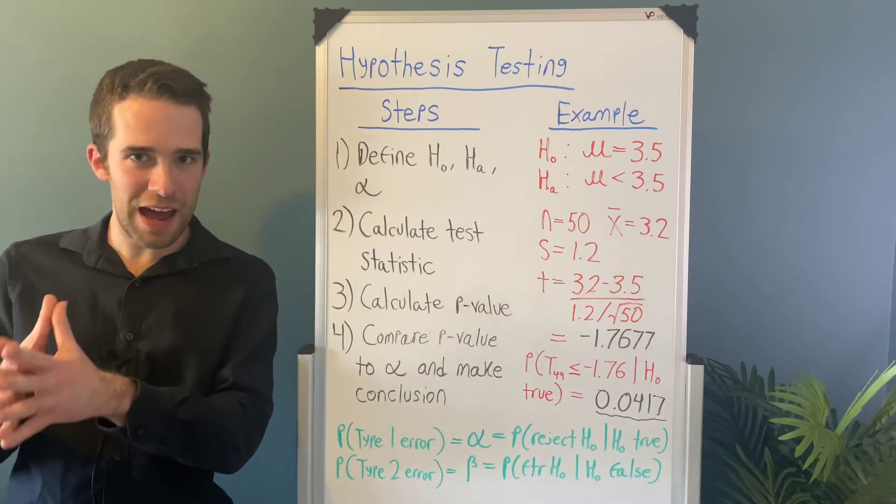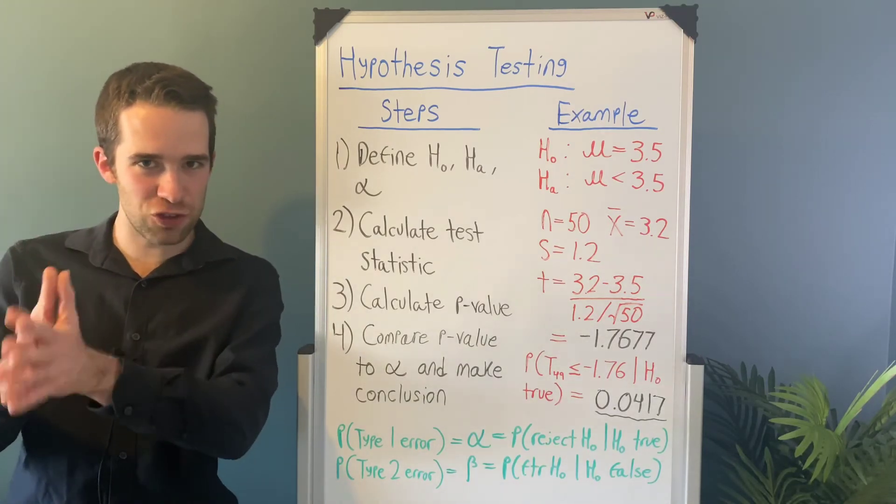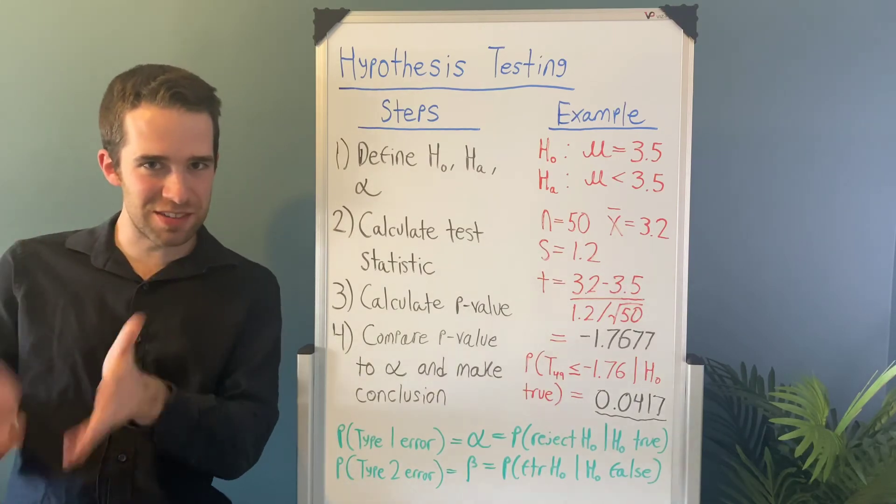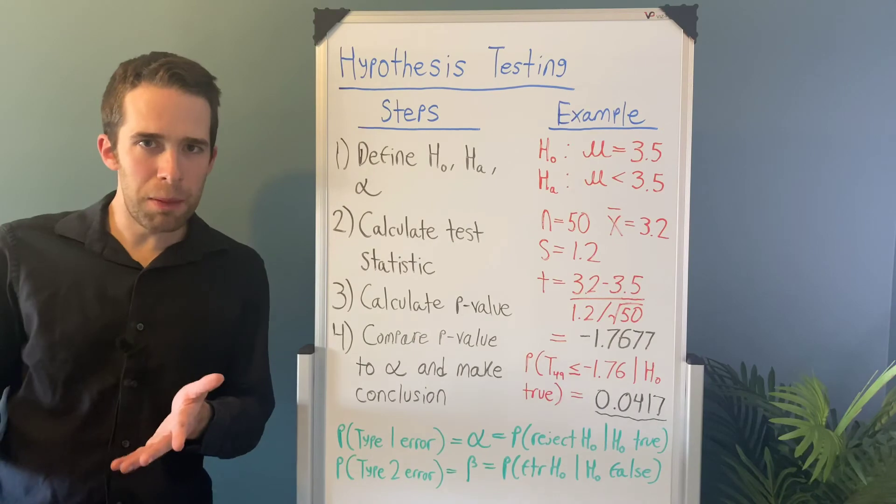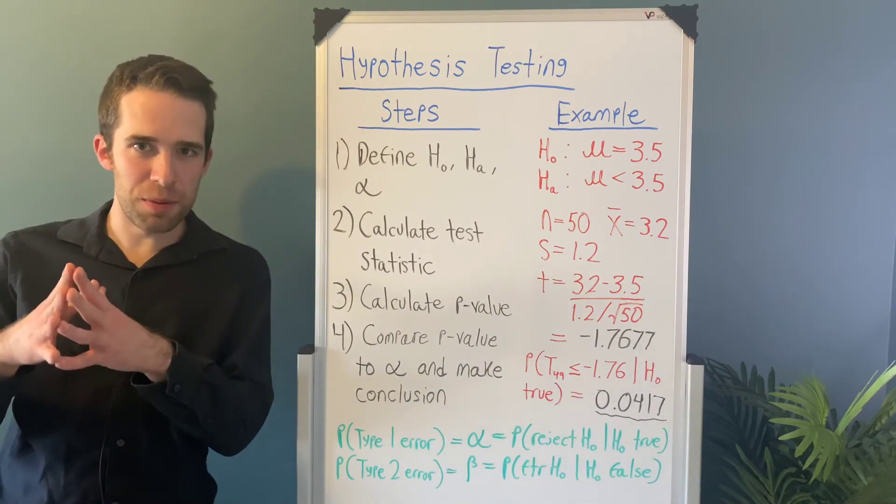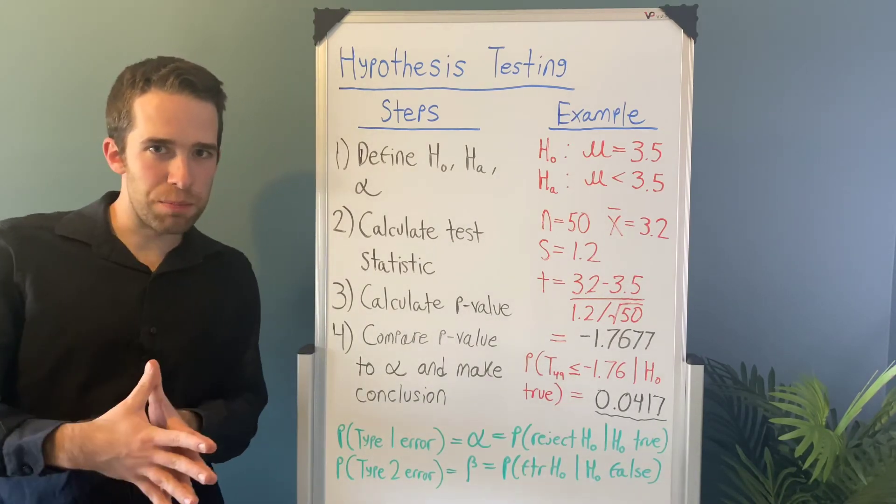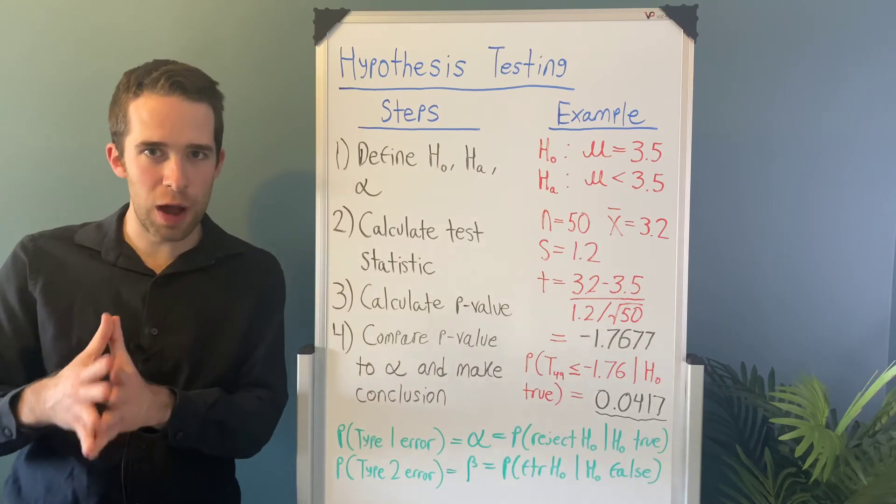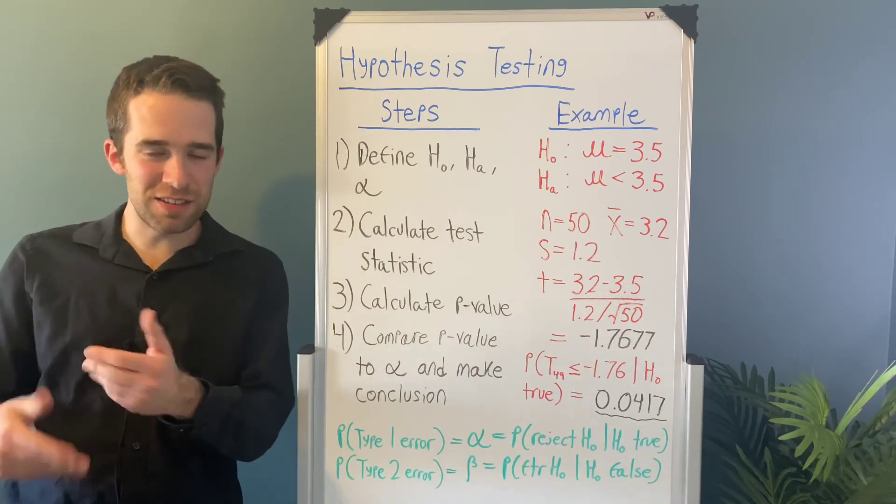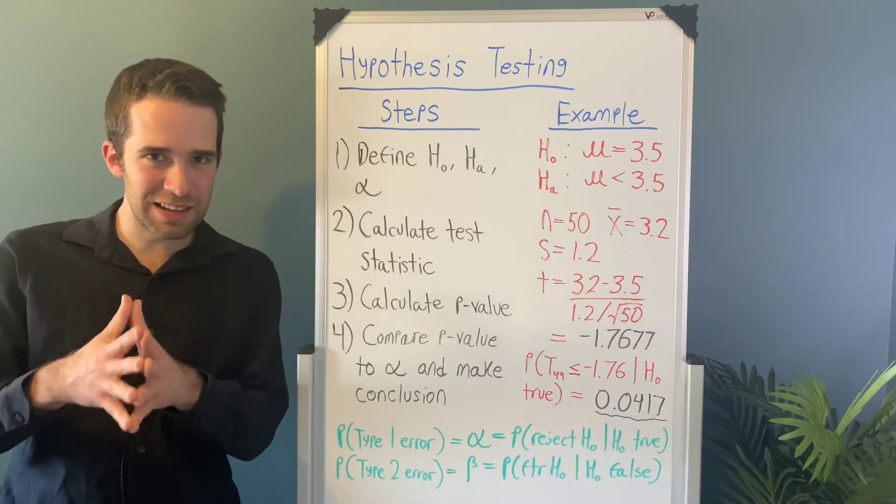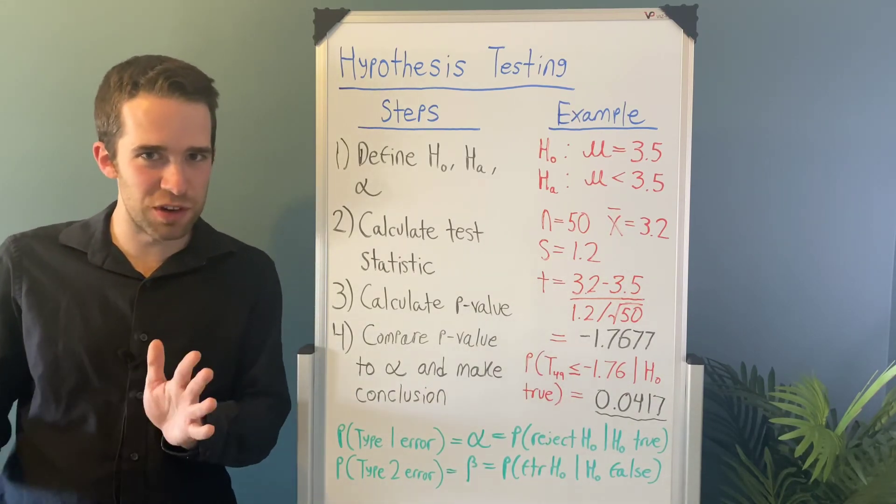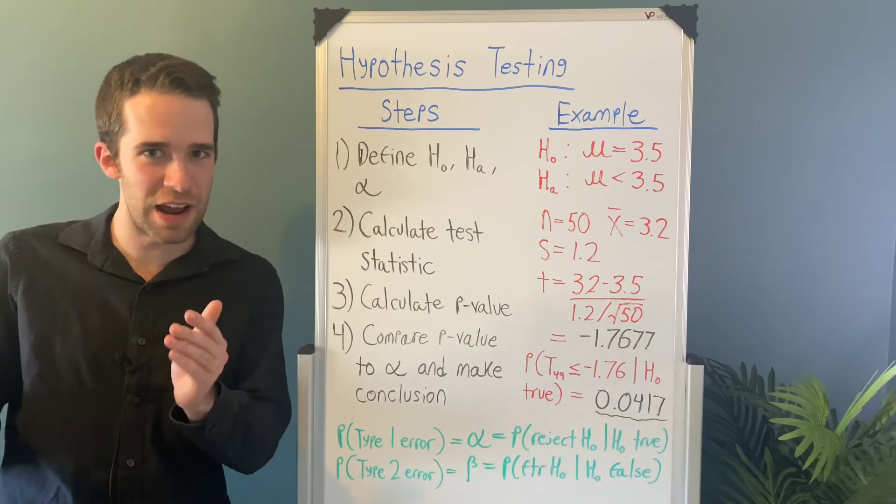So we would have rejected the null hypothesis even if it's actually true, and we would have made a mistake. Now this is what's called a type 1 error. The probability of a type 1 error is represented by alpha, and it's the probability that we reject the null hypothesis if it's actually true. This is the exact same thing as the significance level, and we select this at the beginning based on how serious the consequences of such an error are.